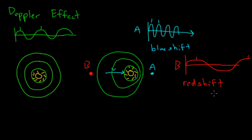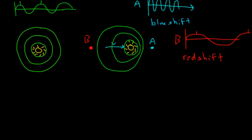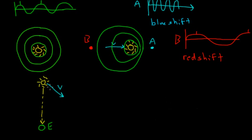Redshift and blueshift tell us about the motion of the source of light. Let's look at this in an astronomy context. Say I have the Earth over here and some distant star — obviously not to scale — sending a beam of light toward the Earth.